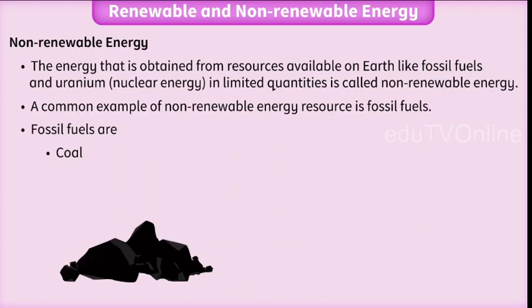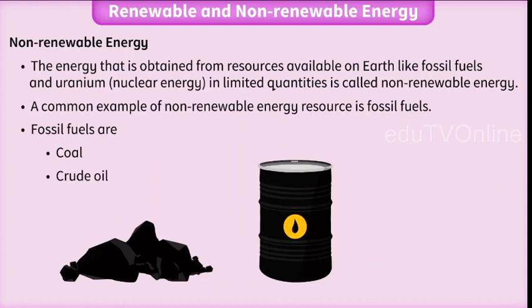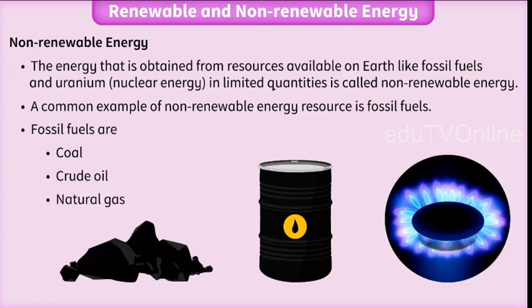Crude oil is the dark-coloured liquid fossil fuel from which other fuels like liquid petroleum gas (LPG), petrol, diesel, etc. are obtained. It is extracted from the seabed. Natural gas is found just above the oil wells under the seabed. This gas is used as a domestic fuel and for running vehicles.